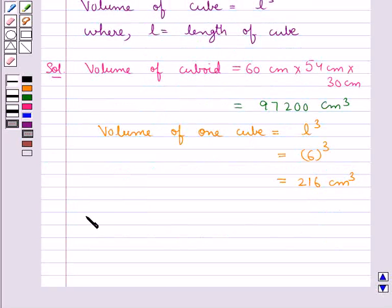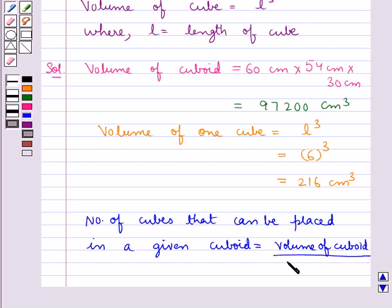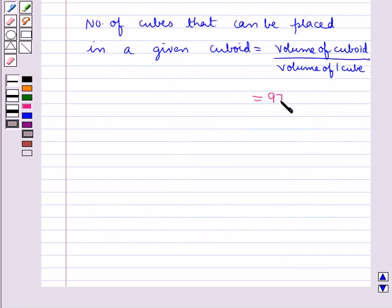The number of cubes that can be placed in a given cuboid is equal to volume of cuboid upon volume of one cube. And this is equal to 97,200 upon 216.